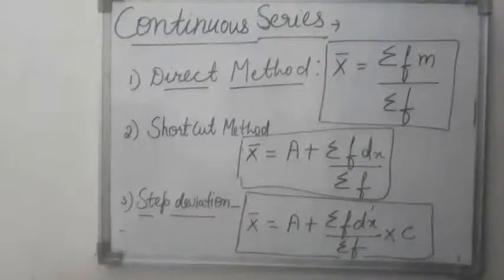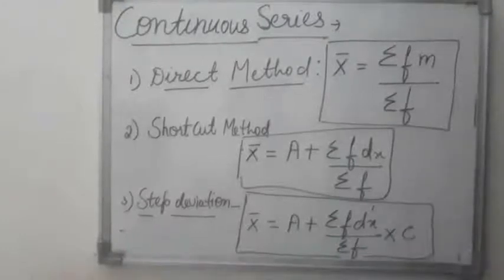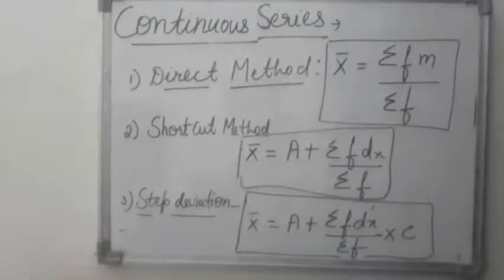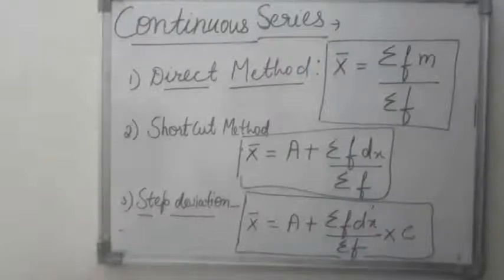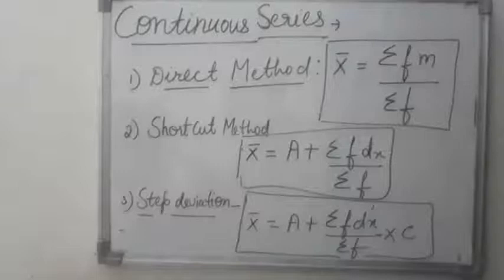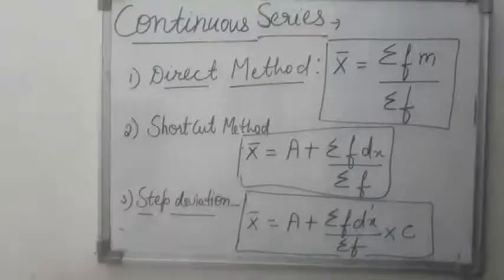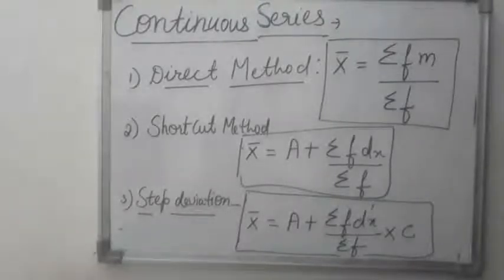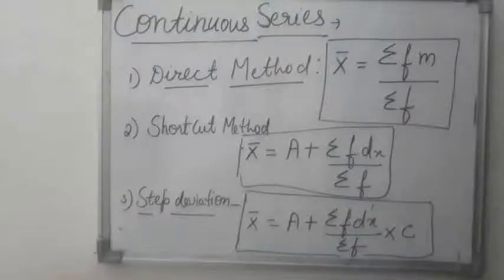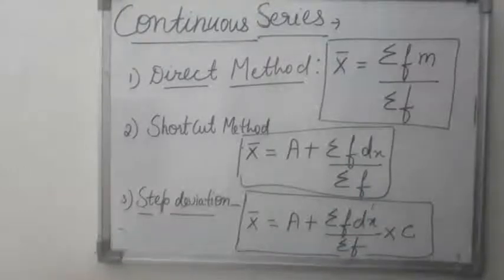There are 3 methods of finding arithmetic mean in continuous series. First, we have the class interval ranges, and we find out the midpoint series. Once we find the midpoints, there is no difference from the discrete series. The first is the direct method.